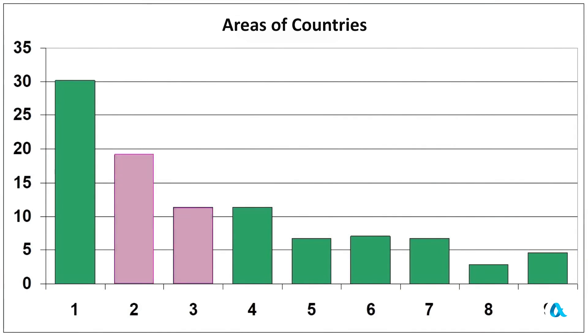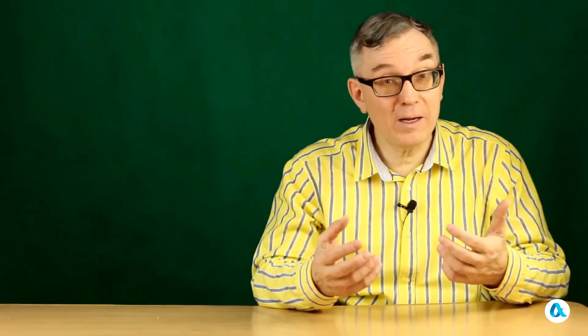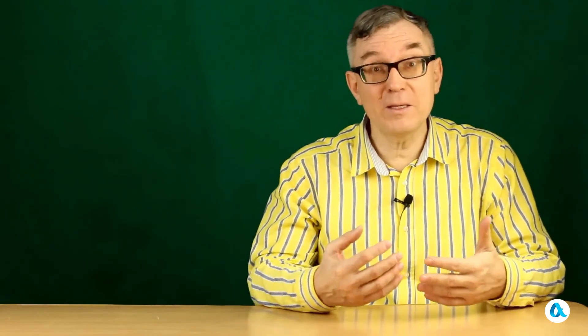It would seem that there is nothing in common between these two data sets. Let's move from political geography to economics and plot the distribution of the first digit of gross domestic product. And once again we see the exact same pattern — we've used completely different data, yet the distribution turned out to be very similar.